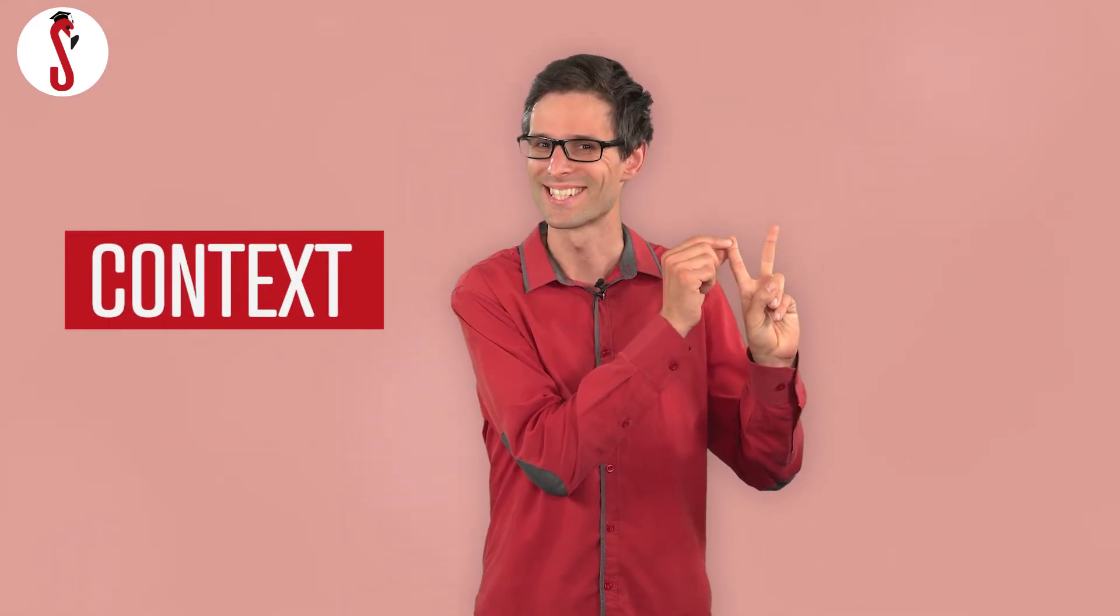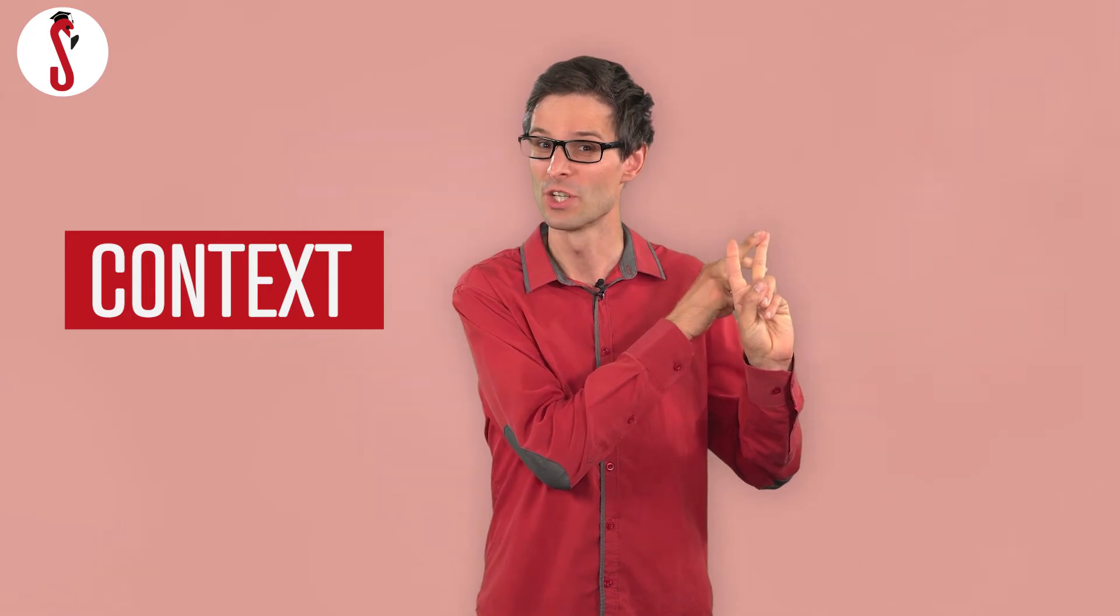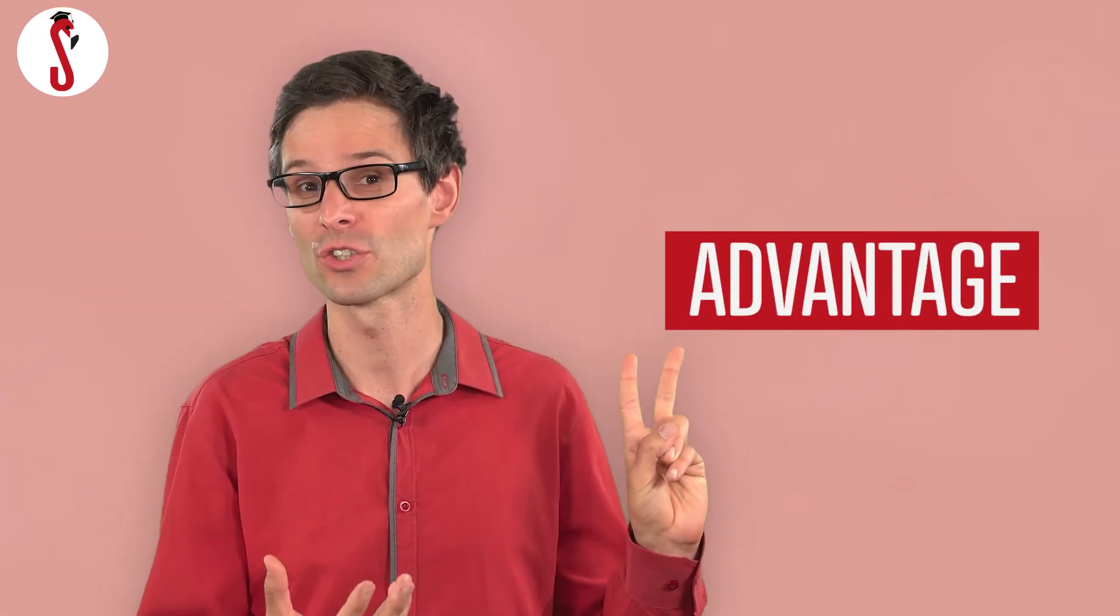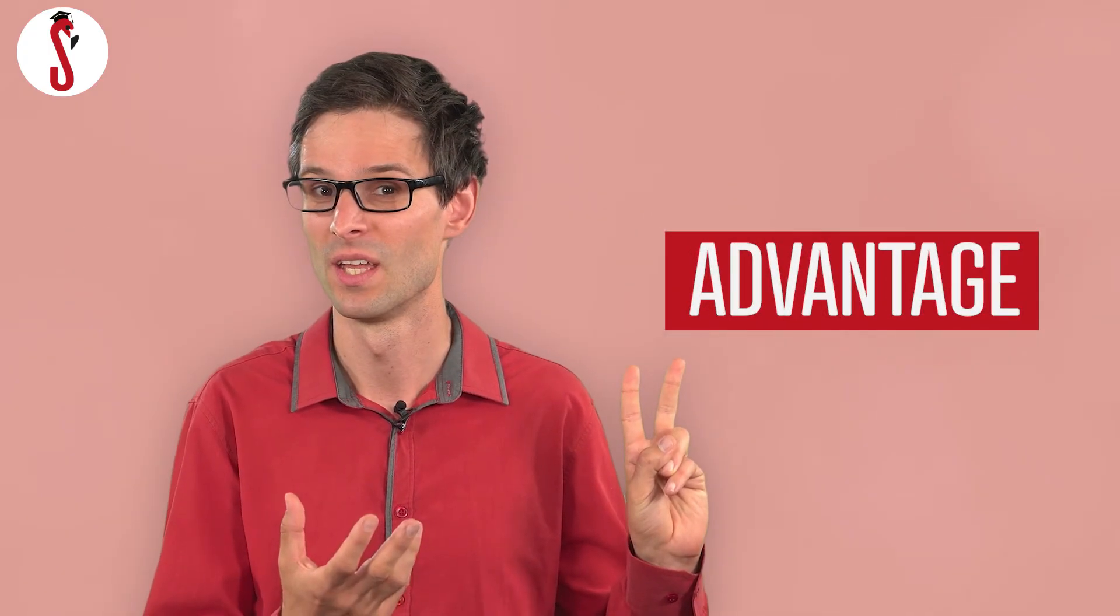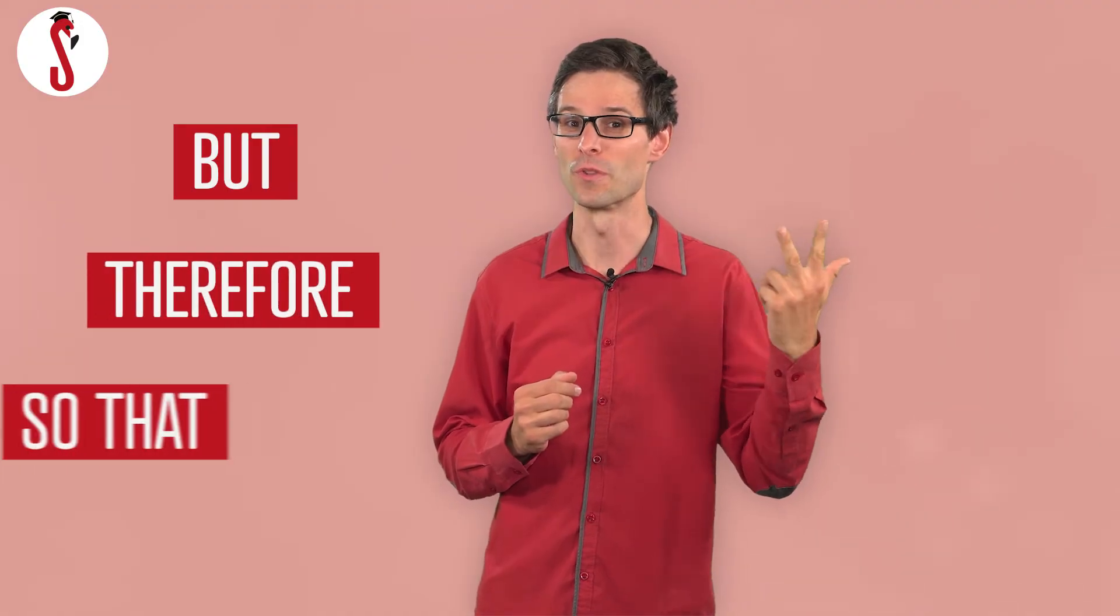Now, there are two extra elements you need to add. First, you have to provide a little bit of context. Second, at the end of your pitch, you have to provide an advantage for your audience. If you take all those elements together and use the words but, therefore, so that, you get a pitch that looks a bit like this.